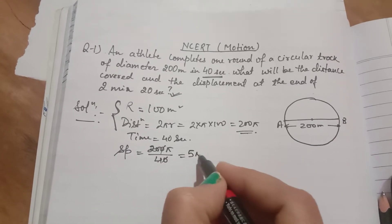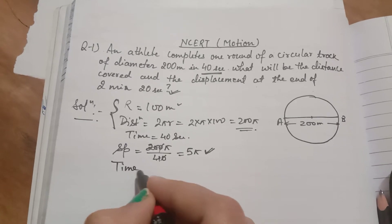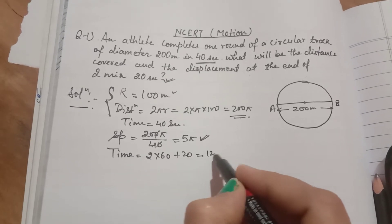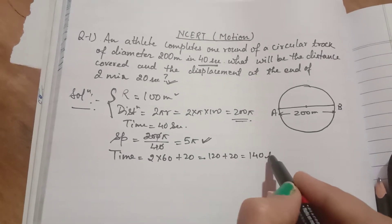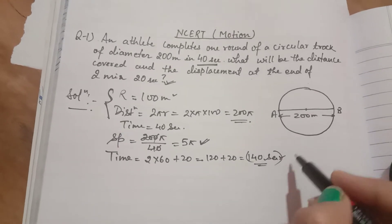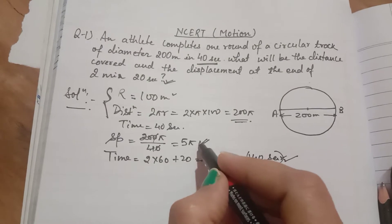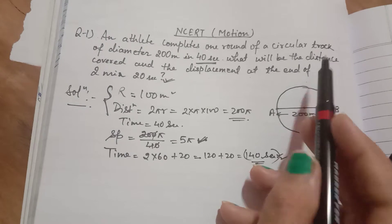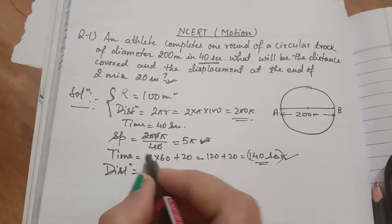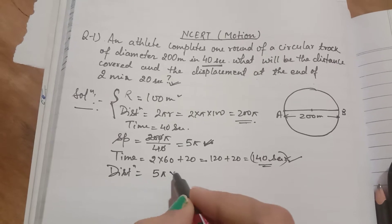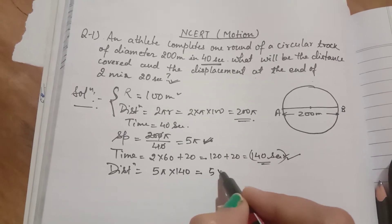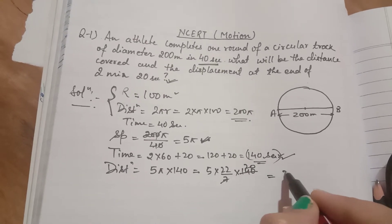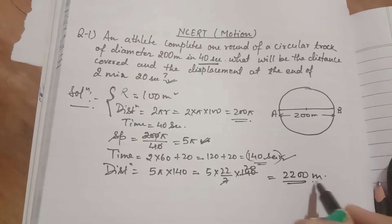The speed of the athlete is 5π. Now convert 2 minutes 20 seconds: 2 × 60 + 20 = 140 seconds. The required time is 140 seconds. Now find the distance covered in 140 seconds at speed 5π. Distance = speed × time = 5π × 140 = 5 × (22/7) × 140 = 2200 meters.